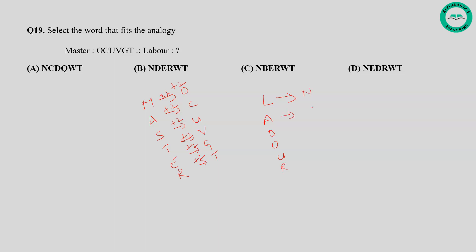Continuing question nineteen with the plus two shift: For A it is C, for B it is D, for O it is Q, for U it is W, for R it is T. So the coded word becomes N, C, D, Q, W, T. So option A is correct.